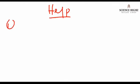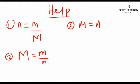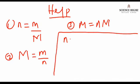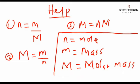Let's look at how we can rearrange the formula. The first form is: n equals small m over capital M. Small n represents the mole, small m represents the mass, and capital M represents the molar mass. The second rearrangement: capital M equals small m over small n. The third: small m equals small n multiplied by capital M.